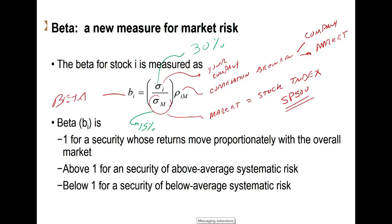Now that's true — you are twice as volatile as the market. But what happens if the correlation between your company and the market is not a one-to-one, not a 100% correlation? Meaning that your company is such that when the market goes up by 10%, your company does not necessarily go up by the same amount. There's a certain lower correlation. Let's suppose that your correlation is 80%.